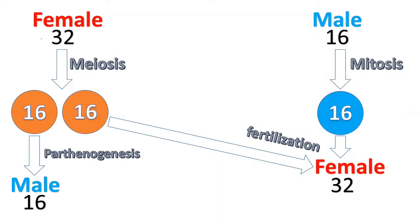In honey bees, the females have two sets of chromosomes — that is, the females are diploid, having 32 chromosomes. The males, on the other hand, are haploid. So if in the diploid condition there are 32 chromosomes, then in the haploid condition there are only 16 chromosomes. This is the most fundamental difference between male and female in sex determination.